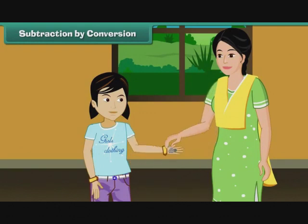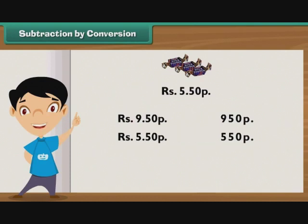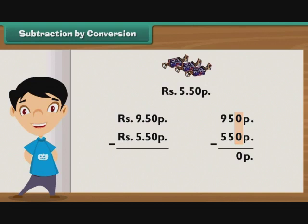Subtraction by conversion. Raveena gets 9 rupees 50 paise from her mother as pocket money. She spends 5 rupees 50 paise on toffees. What is the pocket money left with her? 9 rupees 50 paise means 950 paise, and 5 rupees 50 paise means 550 paise. Write 550 paise under 950 paise and subtract: 950 minus 550 equals 400 paise, that is 4 rupees. So the amount left with Raveena is 4 rupees.